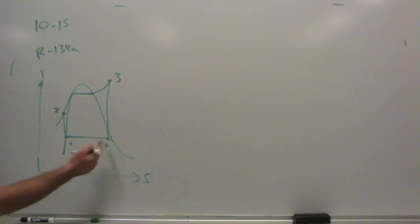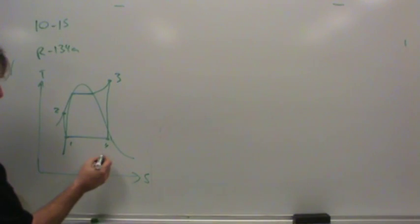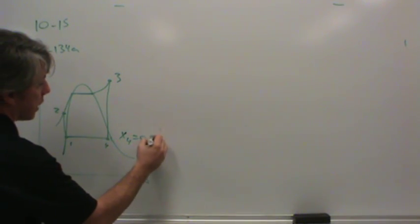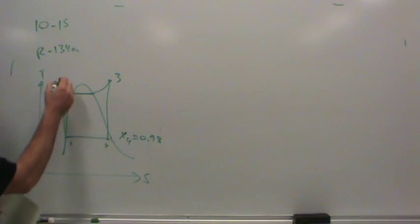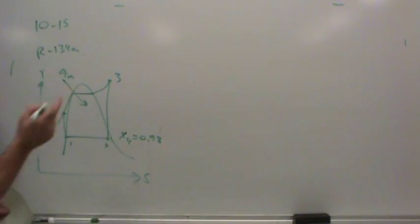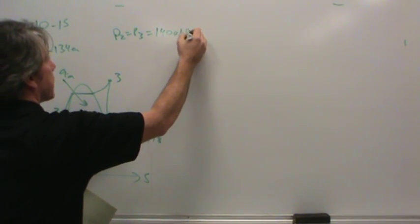Because we were told that the quality is 98%, so it's not all vapor, but it's mainly vapor. Basically what they told us is that the quality in state four is 98%. They told us that the pressure of the boiler is 1400 kilopascals. What state does that go with? State three, right? Because state two to state three, that's where heat addition occurs. And that occurs in the boiler. So really they gave us P2 equals P3 equals 1400 kilopascals.